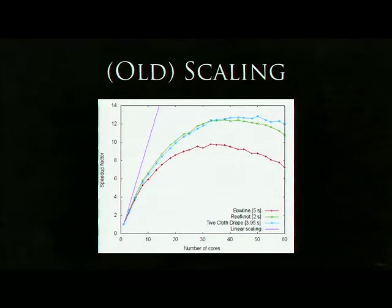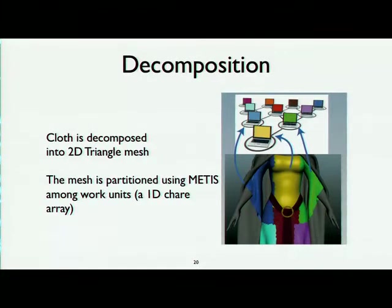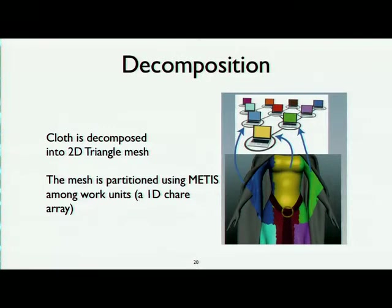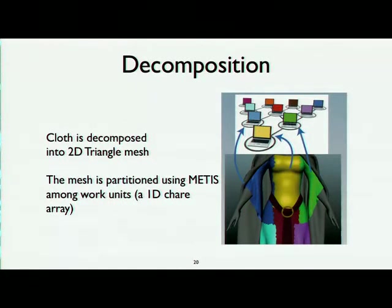I will talk about how we put the cloth simulation code into Charm++ and the optimizations we have done. The cloth piece is decomposed into a 2D triangular mesh, and the mesh is further partitioned using METIS among work units represented as a 1D chare array in Charm++. Different cloth pieces are divided into different chare elements and mapped to different processors.